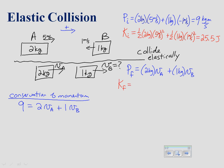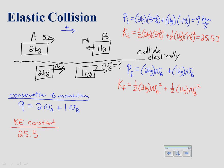The final kinetic energy is ½ × 2 kg × VA² plus ½ × 1 kg × VB². Setting initial kinetic energy equal to final kinetic energy: 25.5 J = ½ × 2 × VA² + ½ × 1 × VB², which simplifies to 25.5 = VA² + 0.5 × VB².